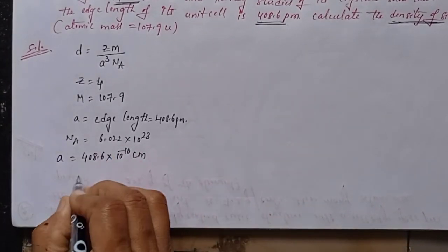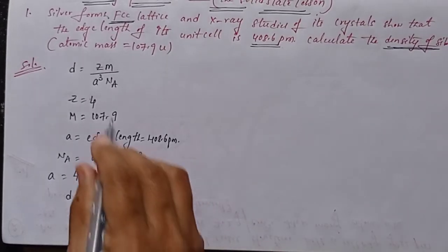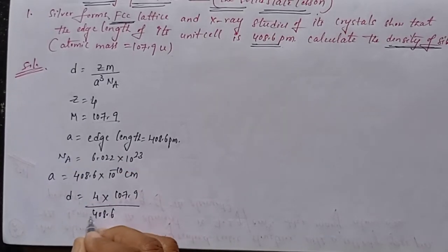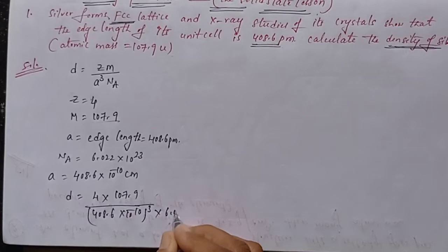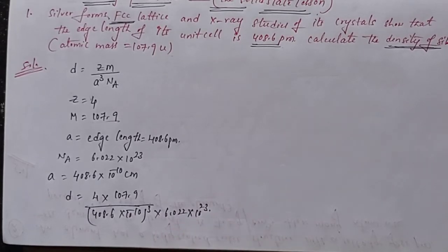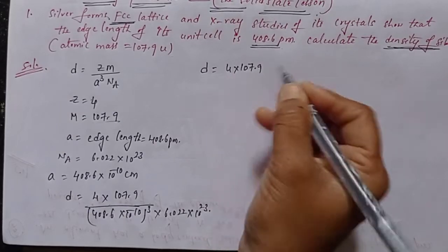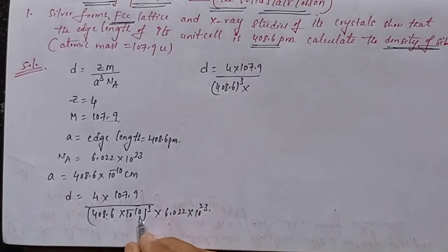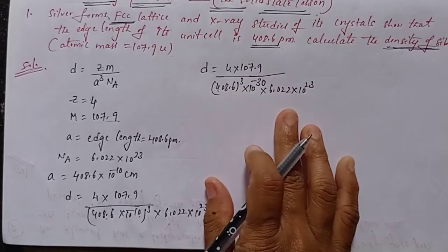Substituting: d = (z × m) / (a³ × Nₐ) = (4 × 107.9) / ((408.6 × 10⁻¹⁰)³ × 6.022 × 10²³). Expanding the cube in the denominator: (408.6)³ × (10⁻¹⁰)³ = (408.6)³ × 10⁻³⁰, and the denominator also includes 6.022 × 10²³.